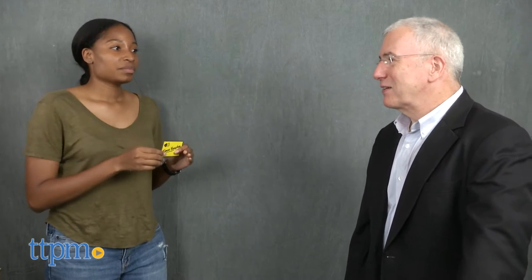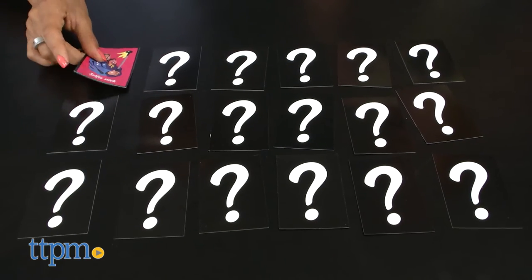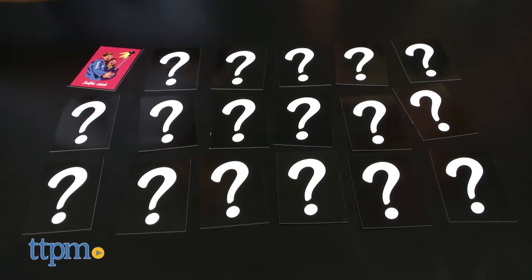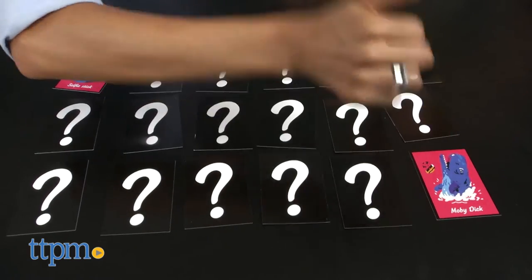Once you've separated into teams, shuffle the rhyming pair cards and place them face down. Every time a team earns three points, they get to try their luck and see if they can pluck a rhyming pair of cards.